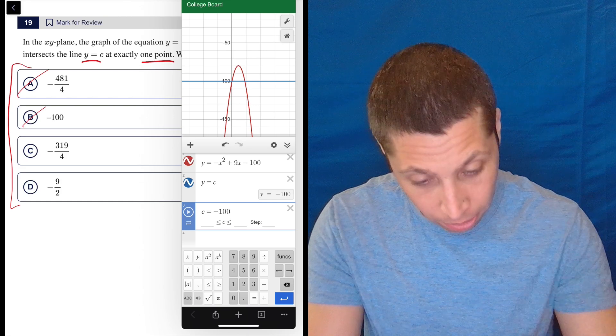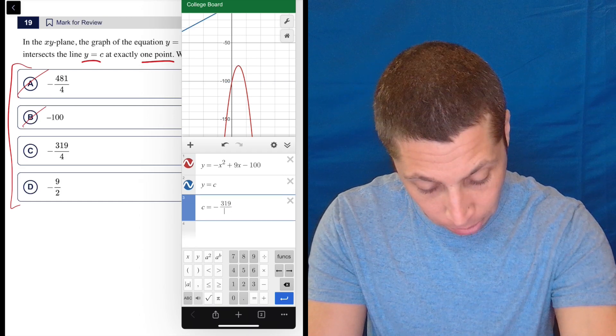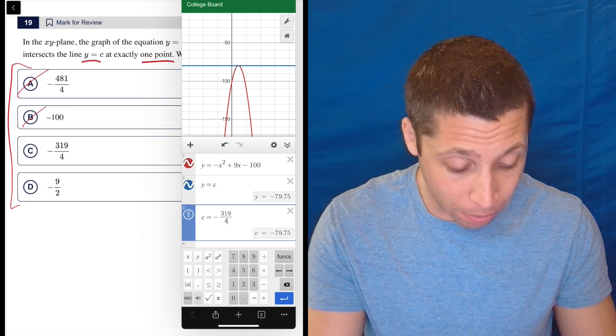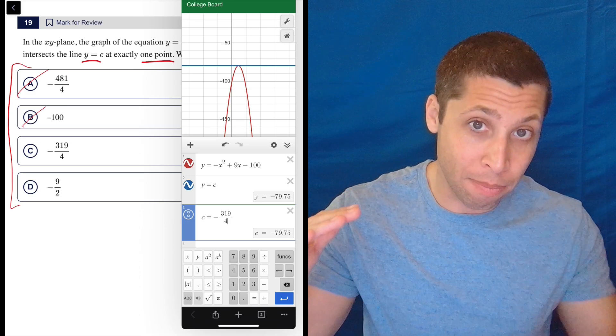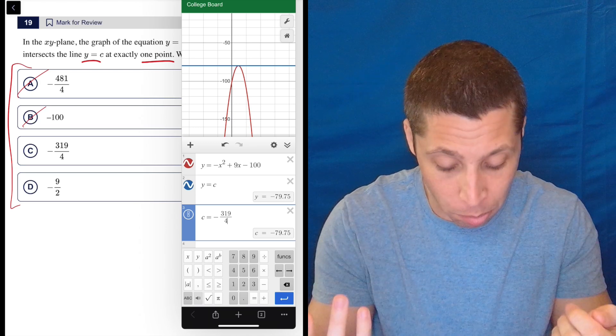Let's do 319 divided by 4. Looks pretty good. I can zoom in and double check, but that looks like the red parabola is hitting the blue line just once. Seems pretty good.